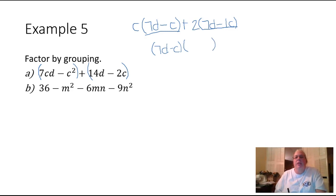And then the second parentheses, well, if I do my little division trick and divide by 7D minus C, which is the parentheses, that will all cancel and leave me with just that C. And then that plus sign right there is going to come down right in the middle. So here's part A. This factors into 7D minus C and then C plus 2.